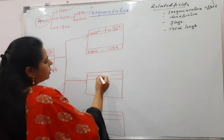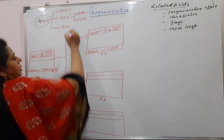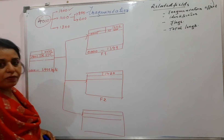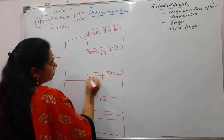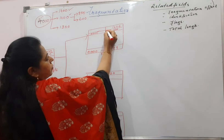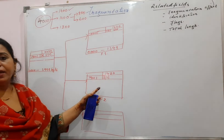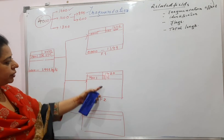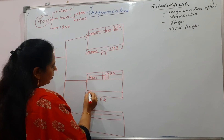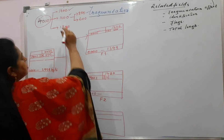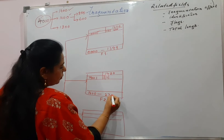In the second fragment, the total length is 1400 plus 20, which is 1420. Identification carries the same value, 19001. More bit is once again 1, which indicates it is not the last fragment — it consists of a middle section of bytes ranging from 1400 to 2799, because the size of the second fragment is 1400 bytes.